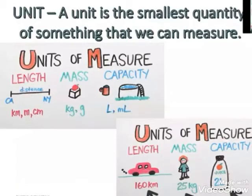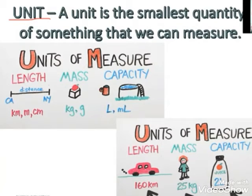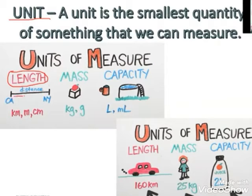Now when we talk about the standard unit of measurement, what is a unit? A unit is the smallest quantity of something that we can measure. When we talk about standard measurement, we need standard objects and units for making measurements. So what are those standard units? We can see here in the picture. If we have to measure a length or a distance, with the help of length only we will be measuring the distance.